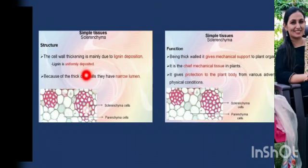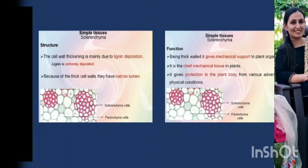Lignin is a complex polymeric molecule composed of cellulose and phenylpropanoid units which provides strength to the cell walls. That's why the cell walls of sclerenchyma cells become rigid and impermeable to water. Because of these depositions, the cell lumen becomes narrow.